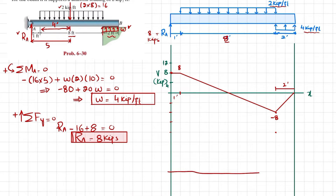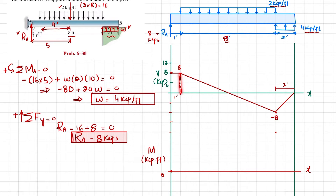Now moving to the bending moment diagram. At the first point, x equals 0, so moment equals 0. The area under the shear force diagram gives the moment. The first area is 8 times 1 equals 8 kip-feet. Since the shear force is a horizontal line, the bending moment is one degree higher, so the slope is increasing linearly to this first point of 8 kip-feet.